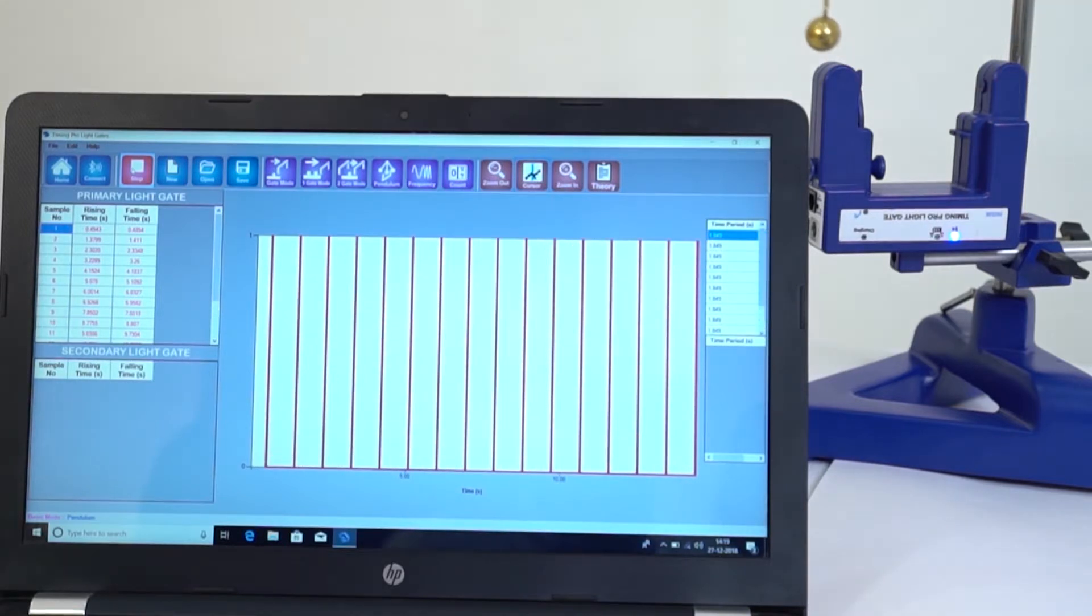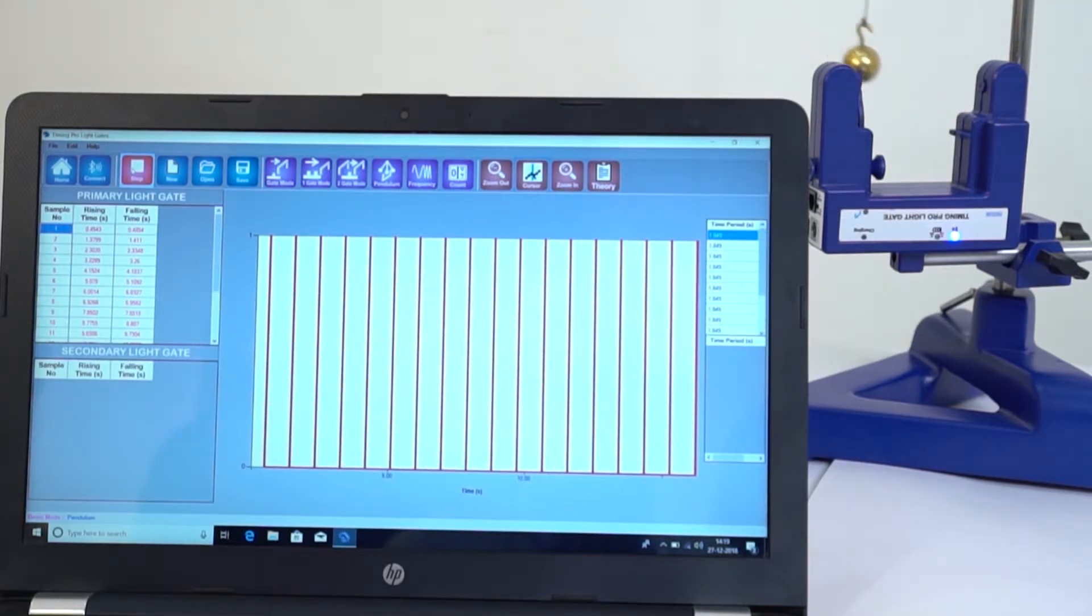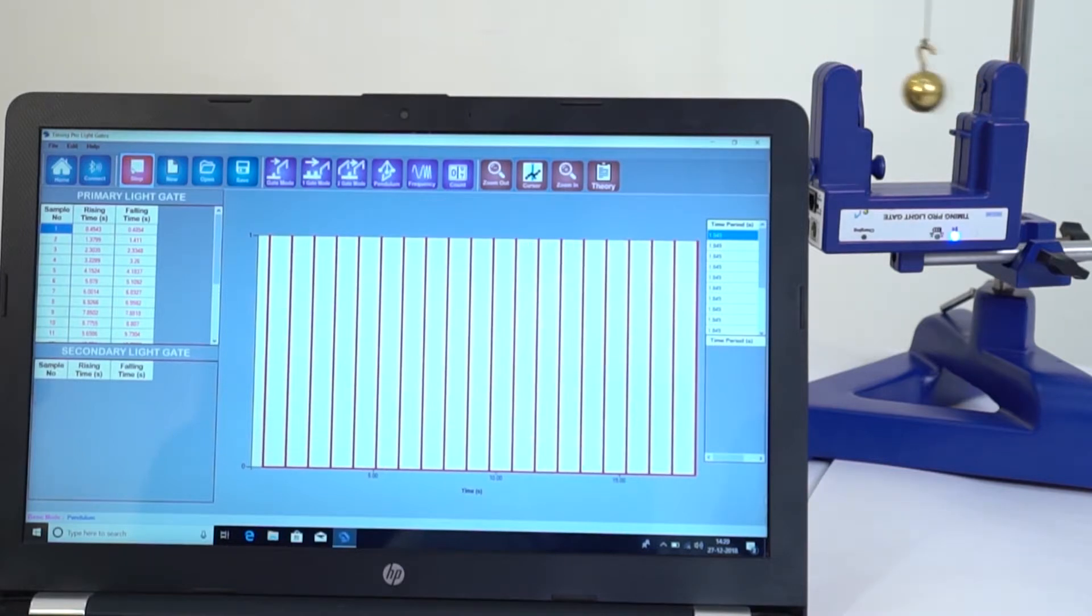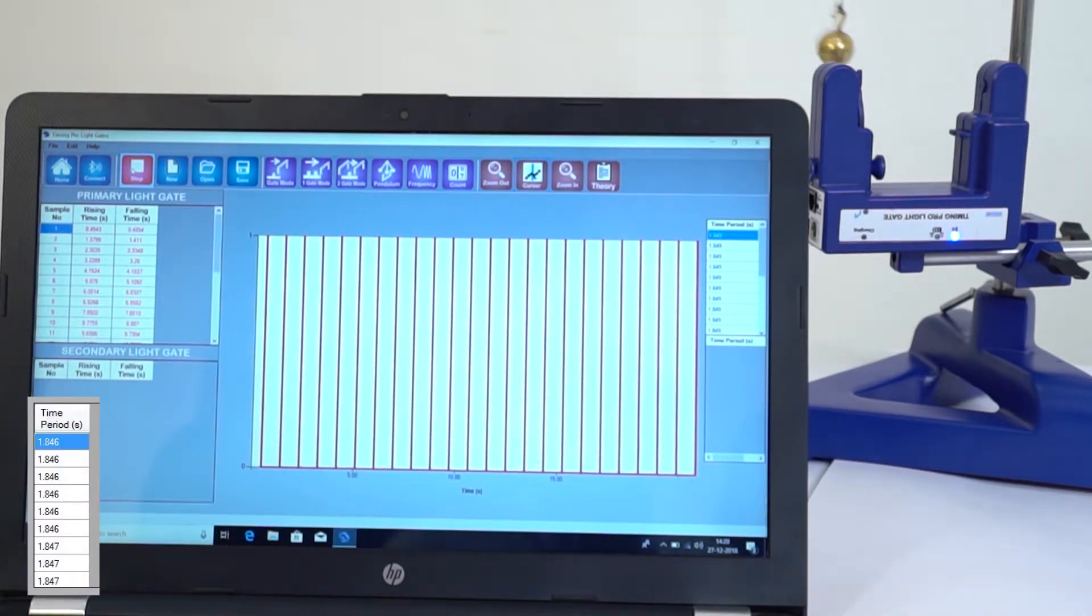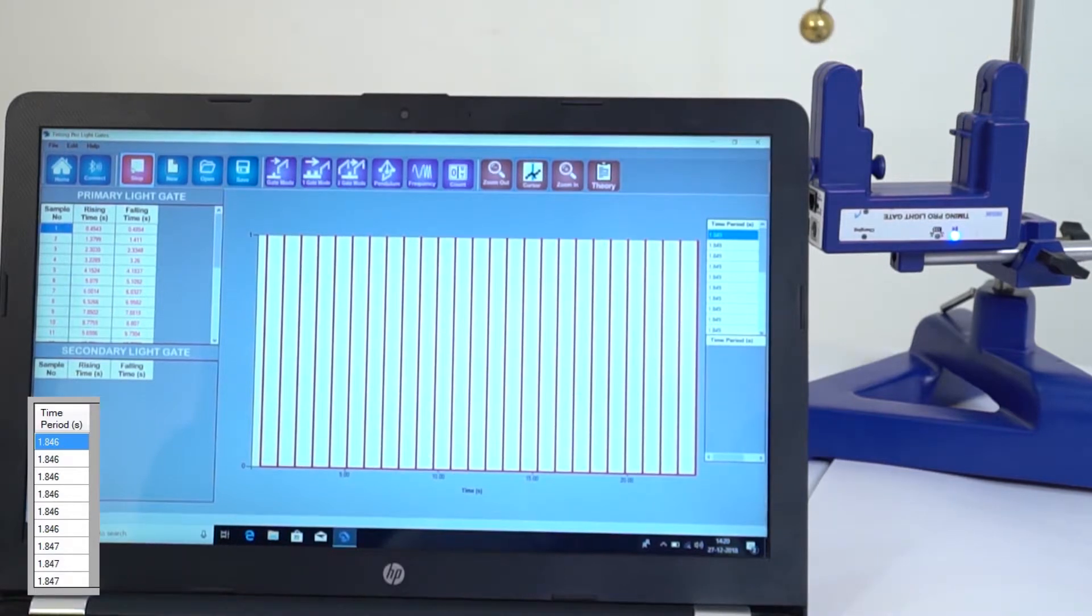Repeating the experiment for different lengths of pendulum supports investigation of the relationship between the period T and the length L of the pendulum.